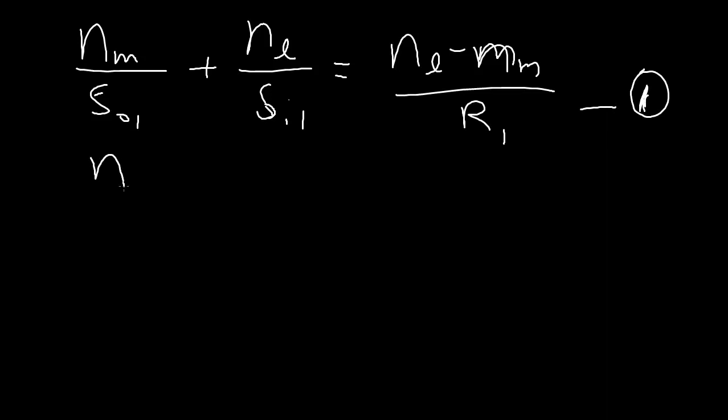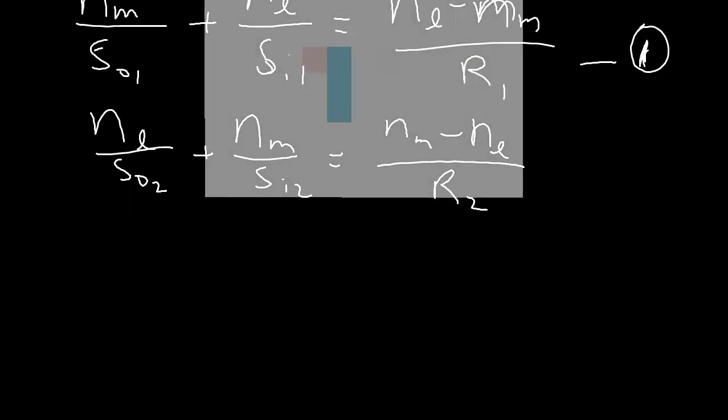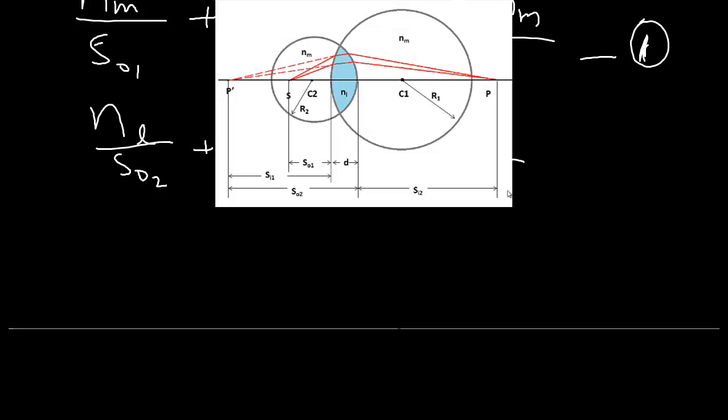Then we also have the second interface, following a very similar manner. Once again, the role of N2 and N1, Nlens and Nmedium swaps around. Looking back at the diagram itself, we can see that SO2 is equal to SI1 plus D.